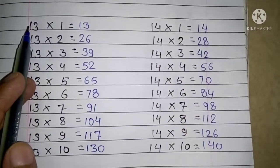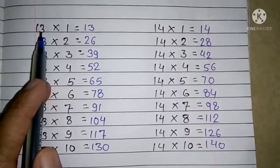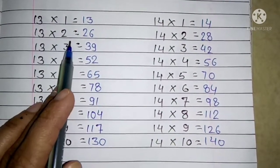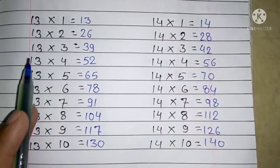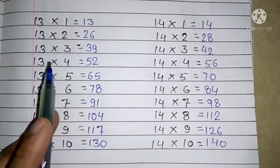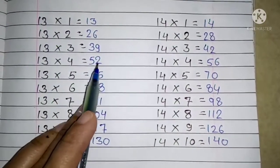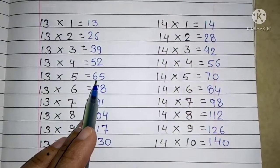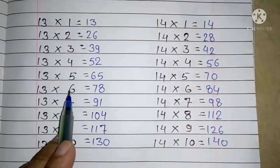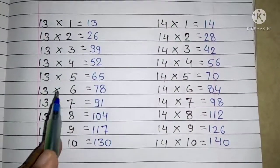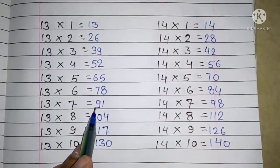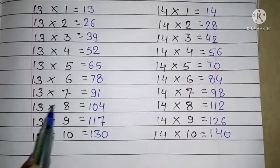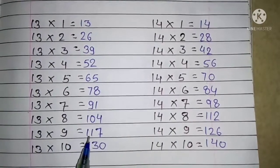Next table 13: 13 ones are 13, 13 twos are 26, 13 threes are 39, 13 fours are 52, 13 fives are 65, 13 sixes are 78, 13 sevens are 91, 13 eights are 104, 13 nines are 117.